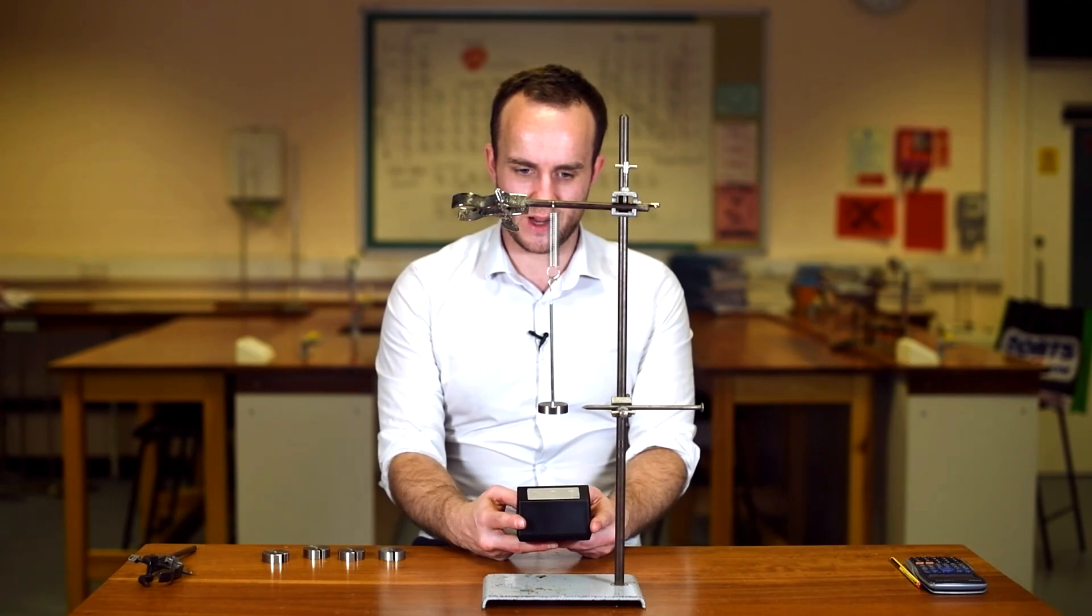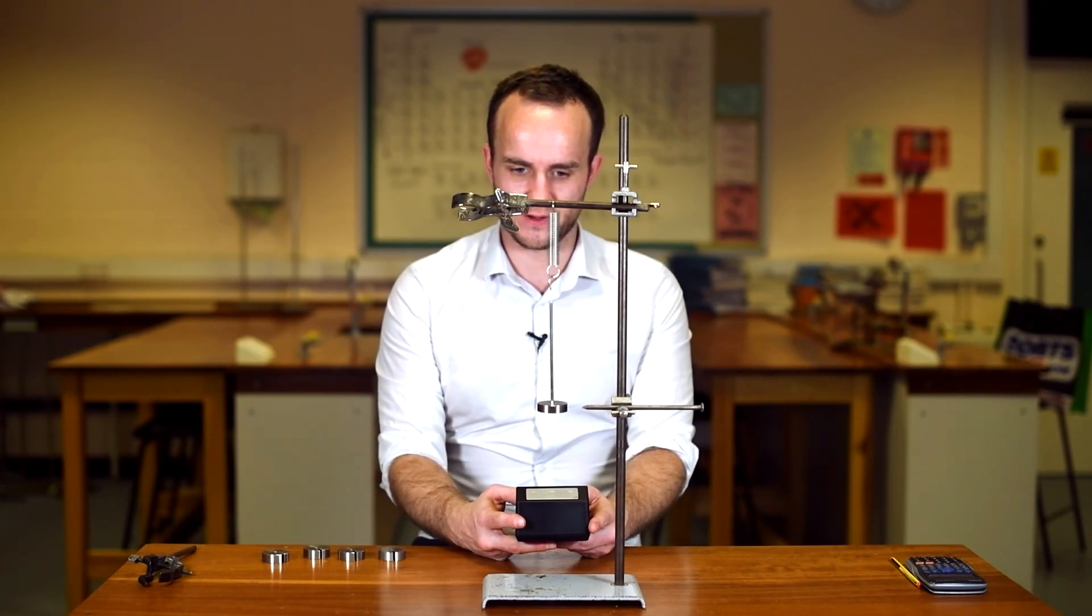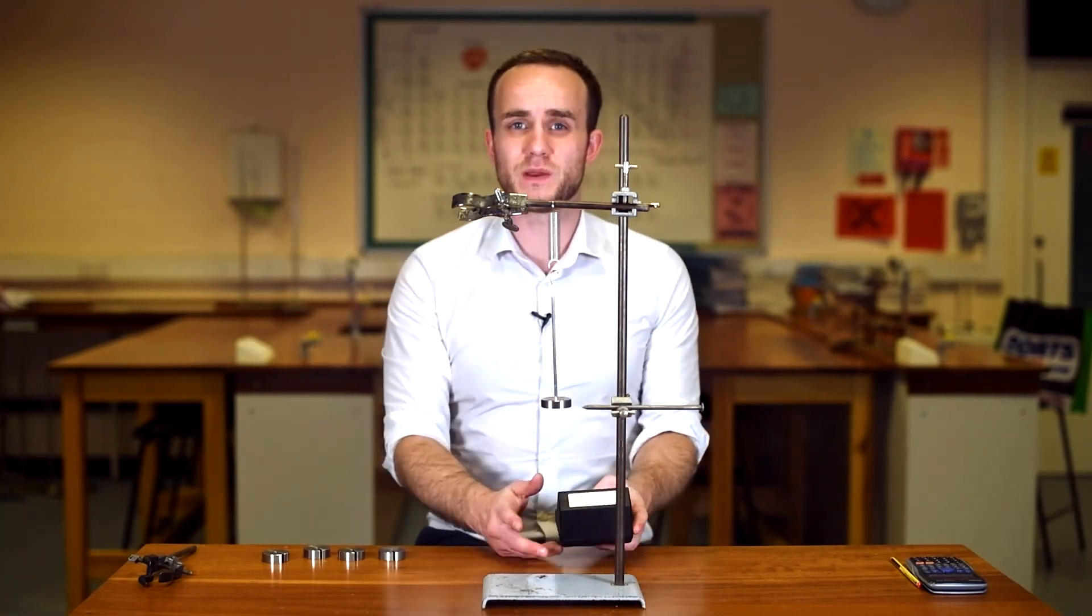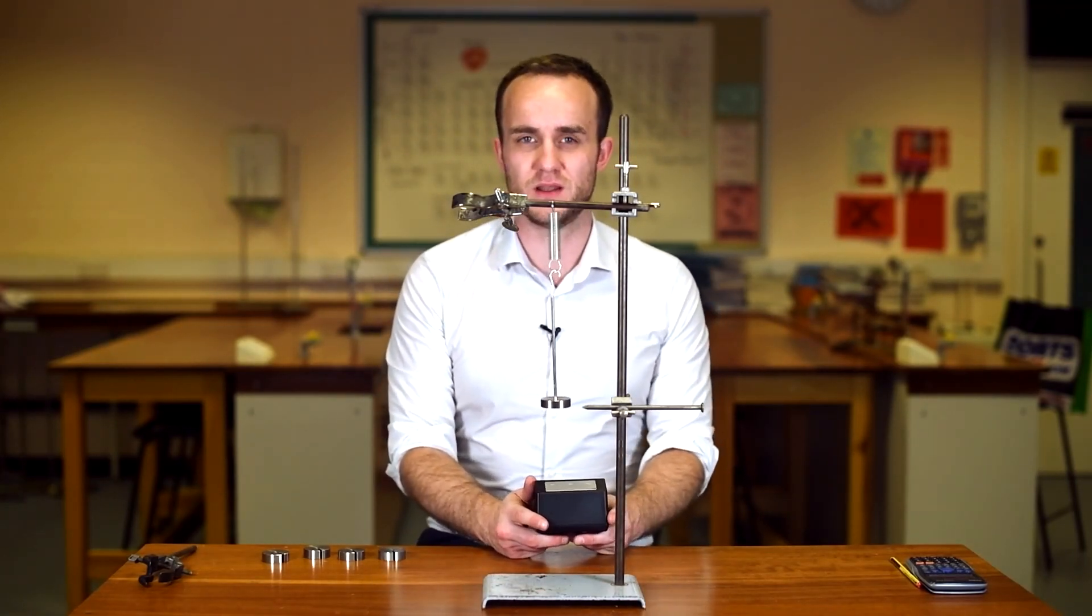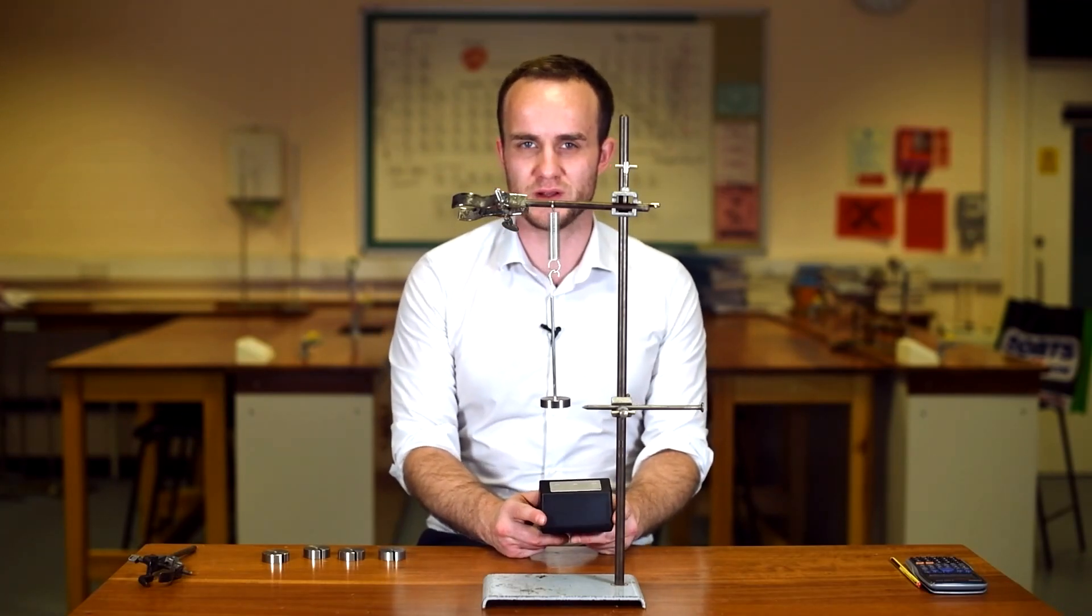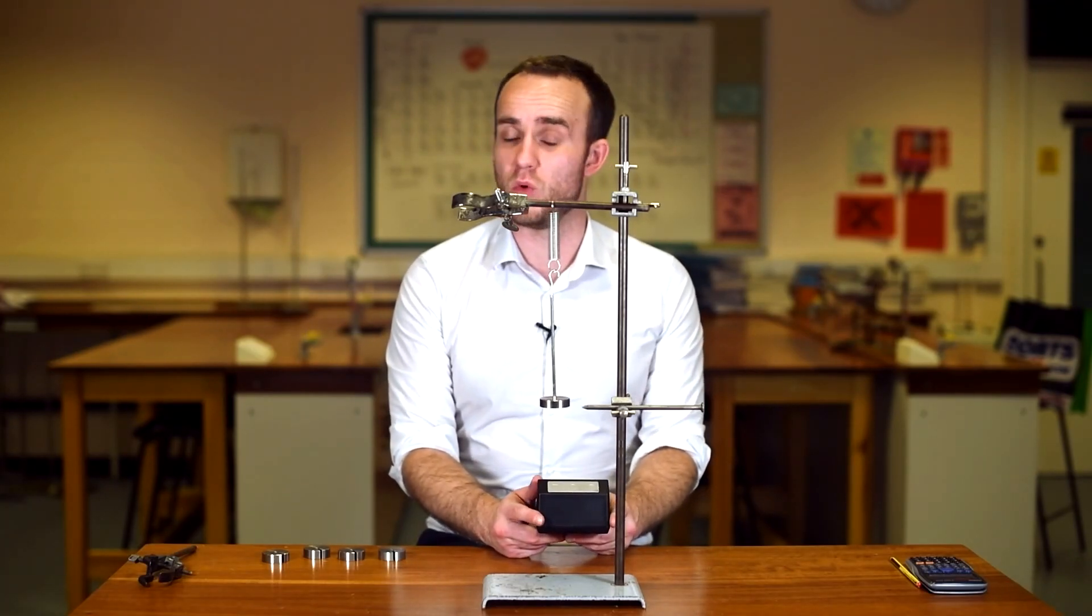Starting now: 1, 2, 3, 4, 5, 6, 7, 8, 9, 10. That was 3.90 seconds divided by 10, so 0.390 seconds. That's my time period for one oscillation for 100 grams.